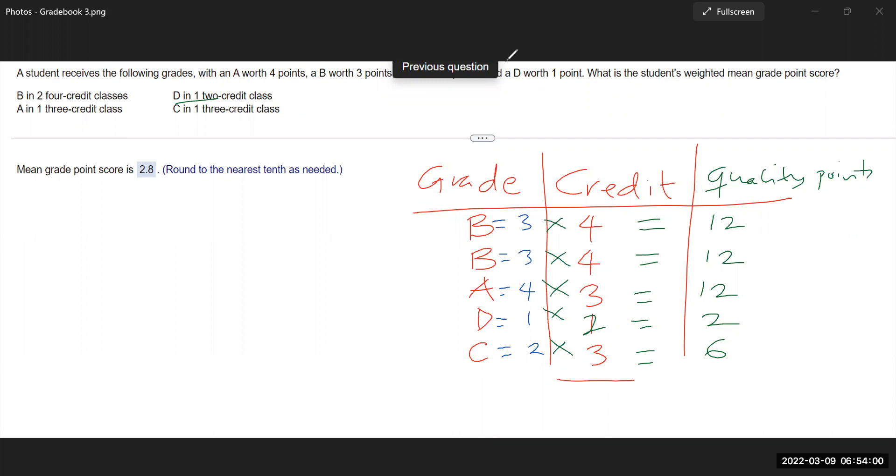So we do four plus four plus three. So four plus four gives you eight. Eight plus three gives you 11. 11 plus two gives you 13. And then 13 plus three gives you 16. So the student took a total of 16 credits.